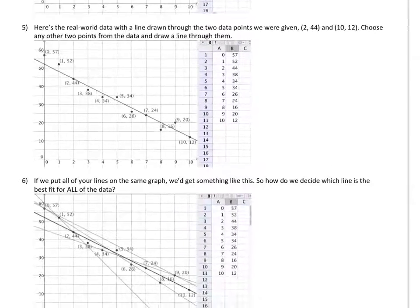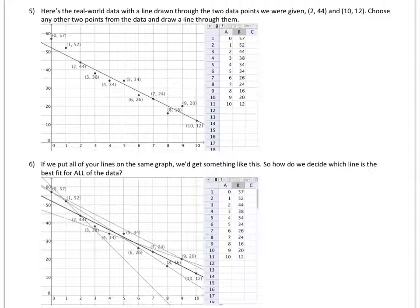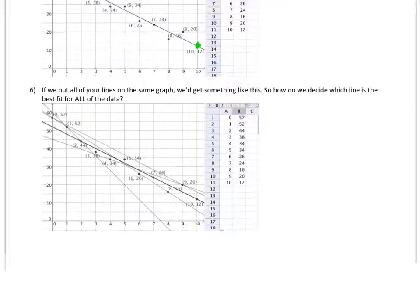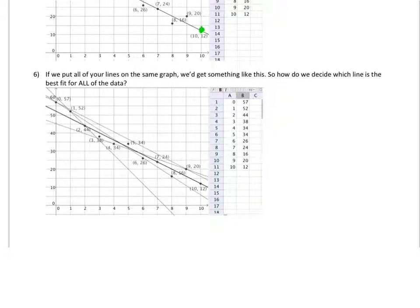Okay, so here's my real-world data with a line drawn through the two data points that we started with, 2, 44, and 10, 12. So this one right here and 10, 12, this one right here. I connected those two points with a line. Looks like a pretty good fit, but those points were chosen arbitrarily. And if you chose a different set of two points, you could get any of these lines from the picture number 6. So how do we decide which one is the best one?